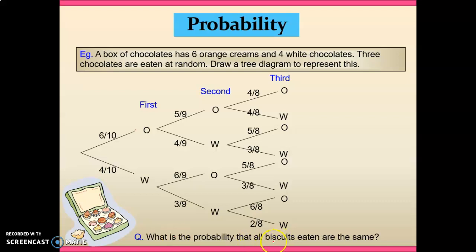So what is the probability that all of the chocolates eaten are the same? So presumably that means that they are all orange. So orange followed by an orange, followed by an orange.